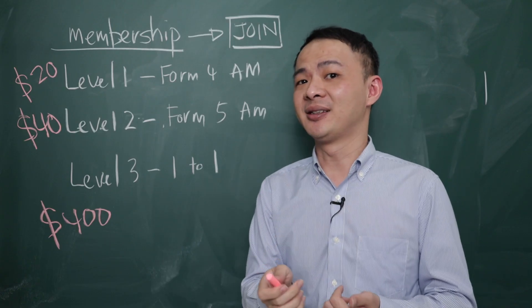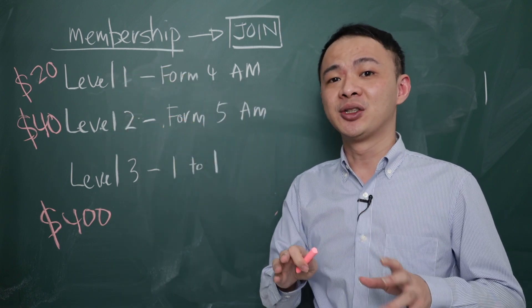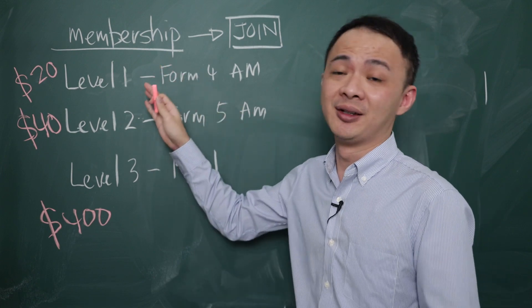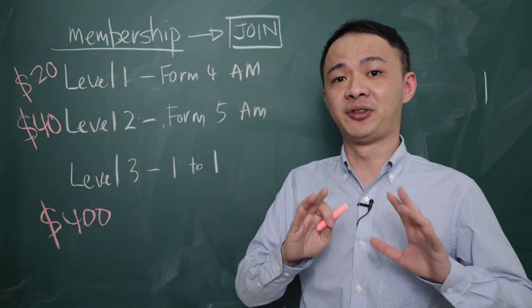When you click at the join button, it should provide you 3 different levels for you to choose. So you need to choose carefully which one you want. So basically, when you choose, we have 3 different levels for right now.